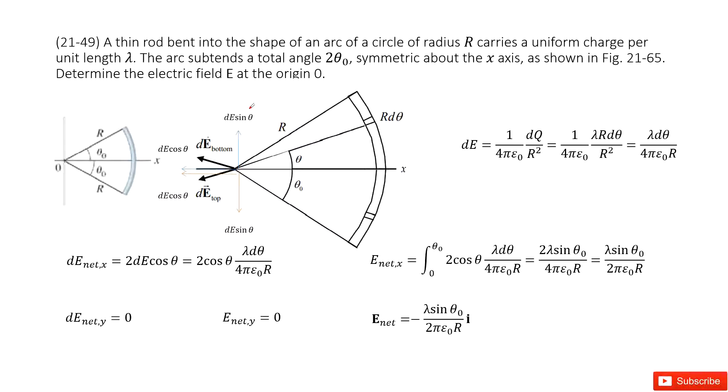Chapter 21 is about electric charge and electric field. So we can see in this system we have a thin rod bent into the shape of an arc, and then the uniform charge is distributed on this arc with the density lambda. The radius is r and we can see the upside is theta naught, downside theta naught. This is mirror symmetry. We need to determine the electric field at the location o.